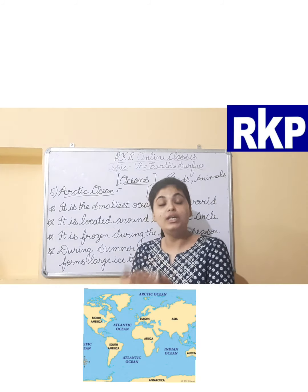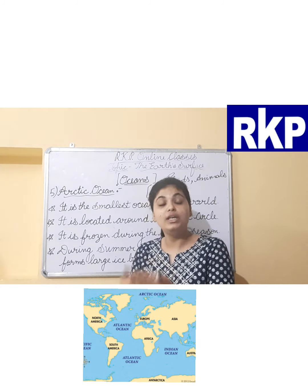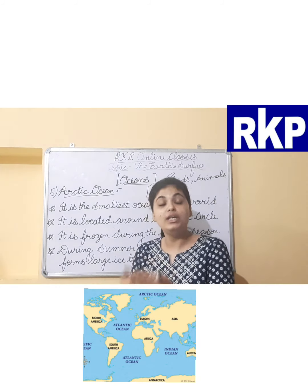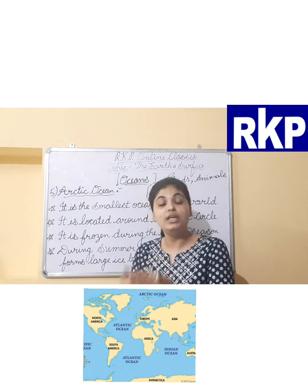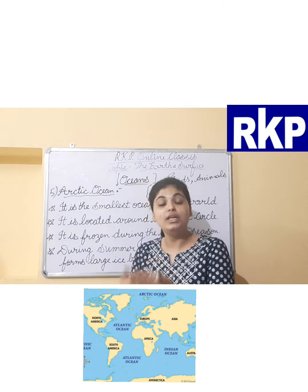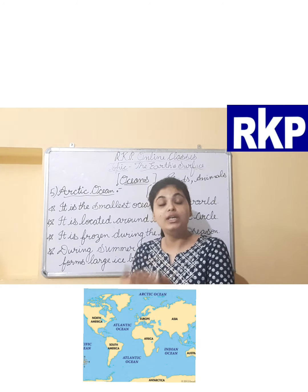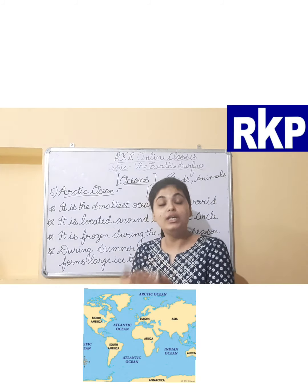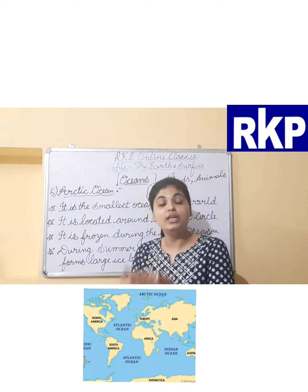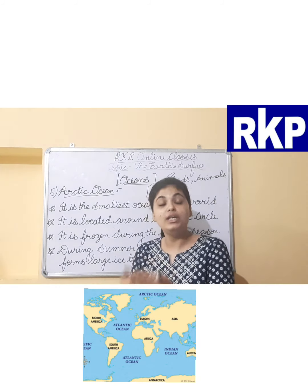In the bridge course we discussed degrees of latitude — the equator, the Tropic of Cancer at 23 and a half degrees, and the Arctic Circle at 66 and a half degrees. The Arctic Ocean is located around the Arctic Circle, which means to the north of the equator.